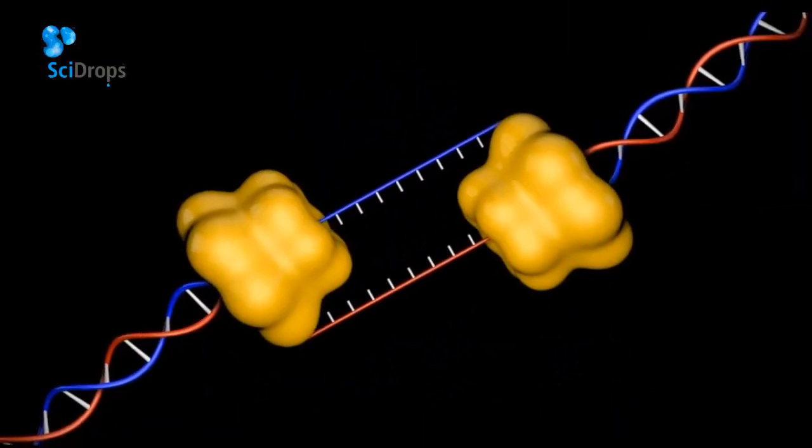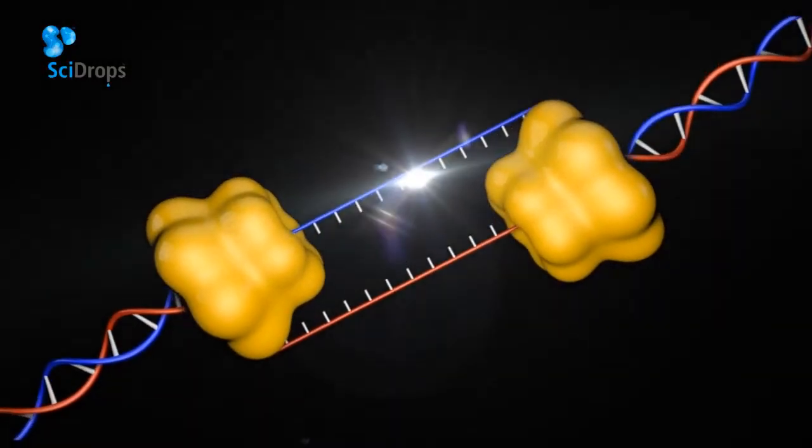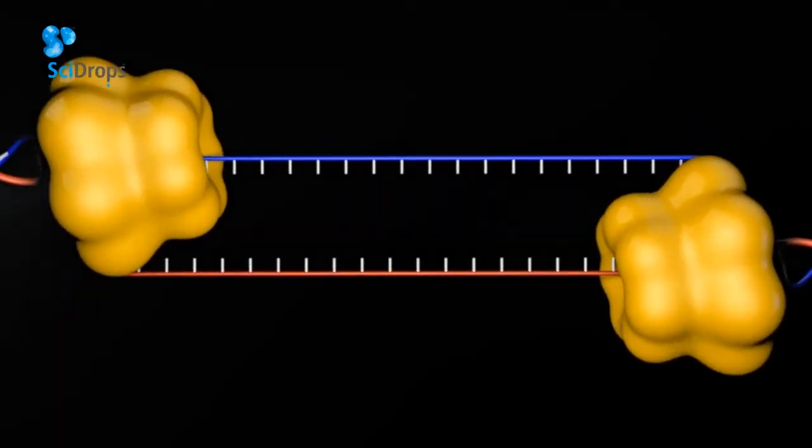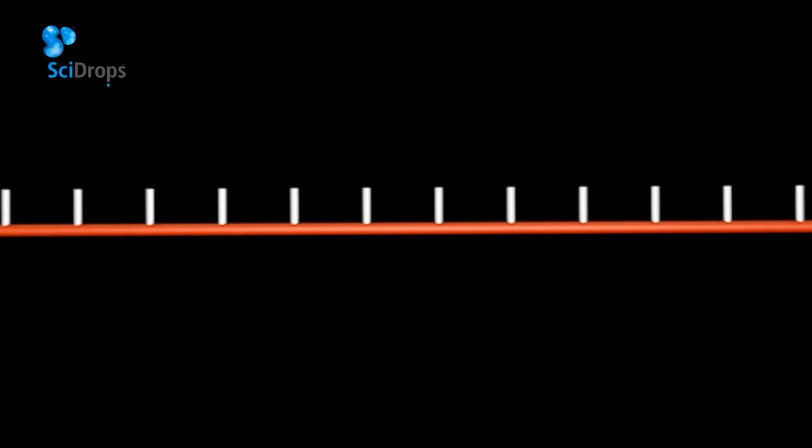DNA replication starts with the opening of the double helix by DNA helicases. This generates two single-stranded DNA molecules, which are then used as templates for the generation of the complementary strand. However, this process has an inherent risk.